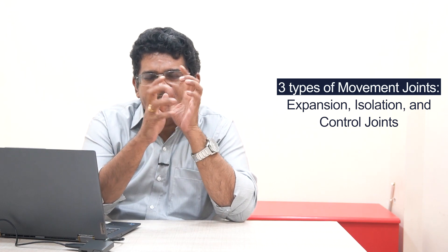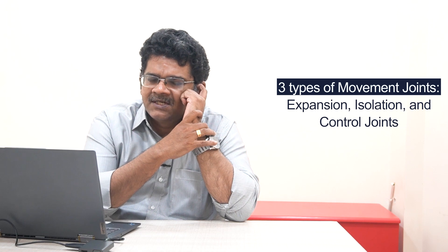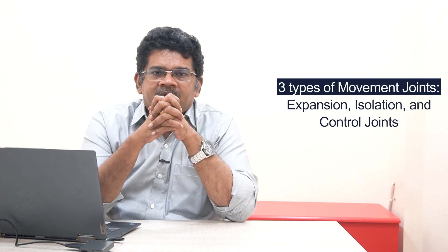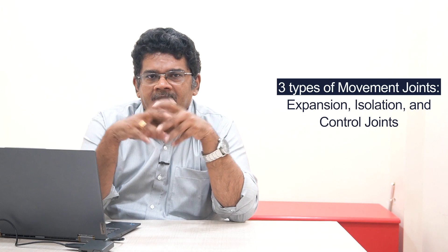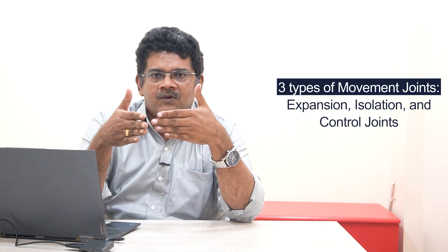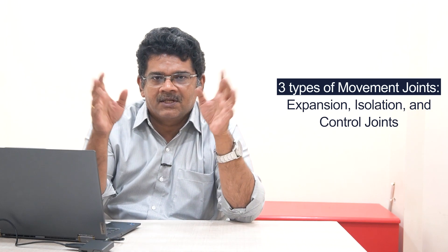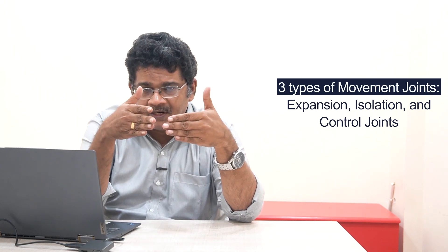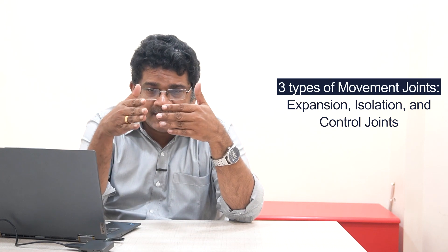Expansion joints are very common in existing buildings. If you look at a building, it may be an L-shape or V-shape. In the case of an L-shape building, there is a joint, and the building is treated as a separate building from the foundation level.